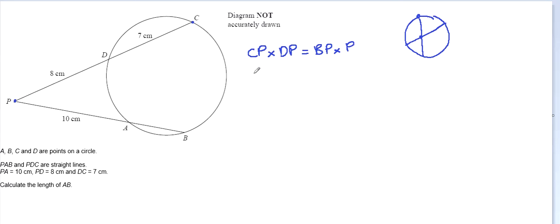We've just got to put some numbers in now. So CP, careful, that's 15. DP, that's 8. Let's turn this again. So what was that meant to be? PA.